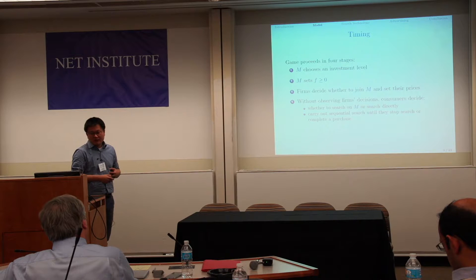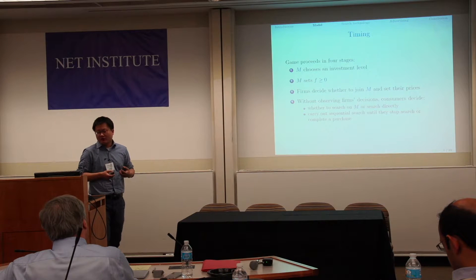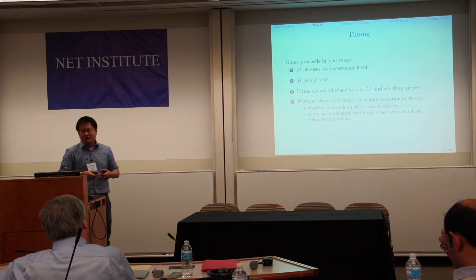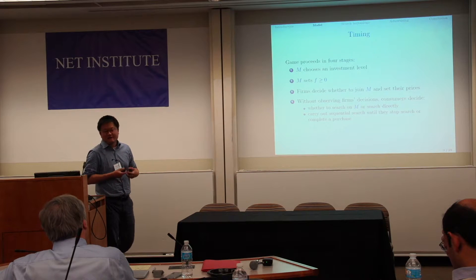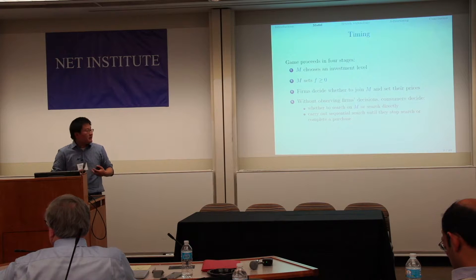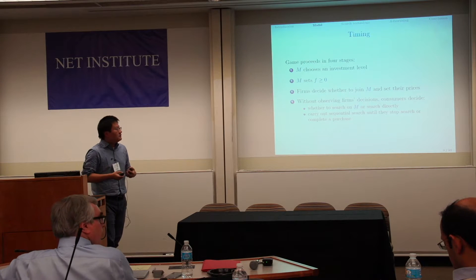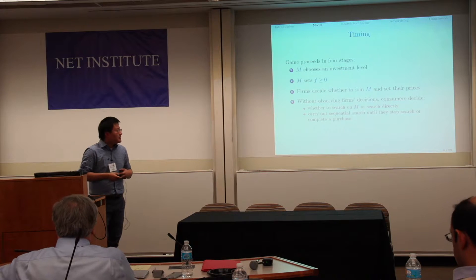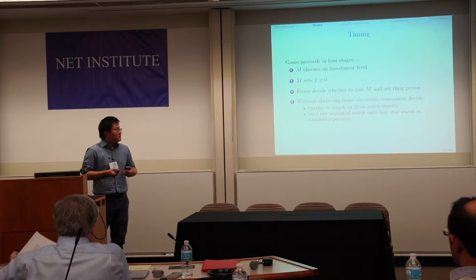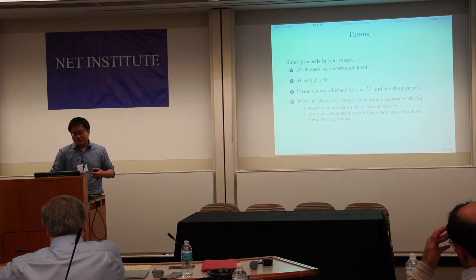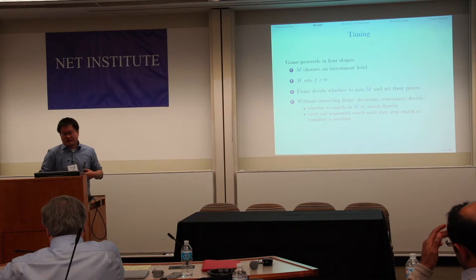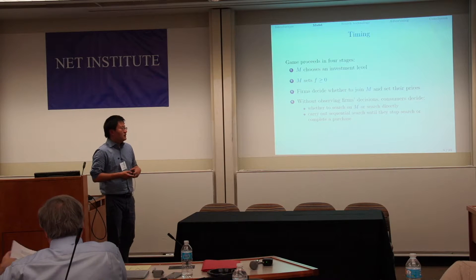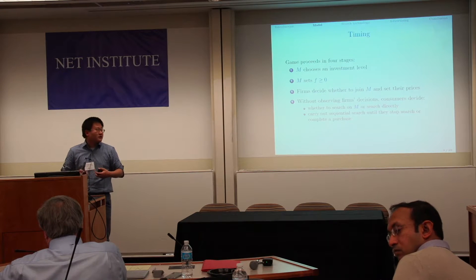The timing of the model is as follows. In the first stage, the platform chooses the investment level — either reducing search costs or advertising. In the second stage, the platform sets the fee. Then firms decide whether to join the platform and what price to charge. Without observing the firm's decision, consumers decide whether to search on the platform or search directly, and then carry out sequential search until they buy a product.